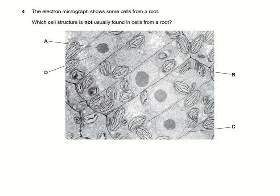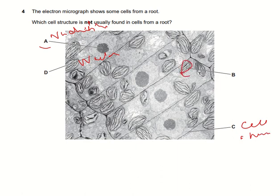The electron micrograph shows cells from a root. Which cell structure is not normally found in root cells? Option A shows the nucleus — it is always present. The nucleolus is also always present. C is the cell membrane — always present. Option B shows something different from the other root cells, so option B is the correct answer.